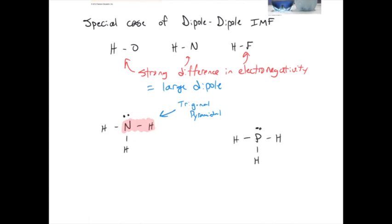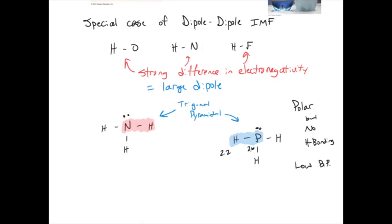Compare NH3 to PH3, where you've got phosphorus in the middle with hydrogens coming off and a lone pair. It's also a trigonal pyramidal and polar molecule. But the difference in electronegativity between phosphorus and hydrogen is not very large — it's 2.6 for phosphorus and 2.2 for hydrogen, a difference of only 0.4. So it is a polar molecule, but it does not exhibit hydrogen bonding. As a result, it will have a lower boiling point than NH3, which would have a significantly higher boiling point.